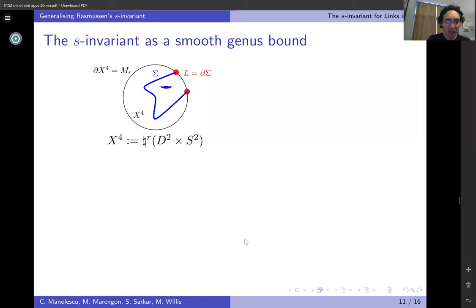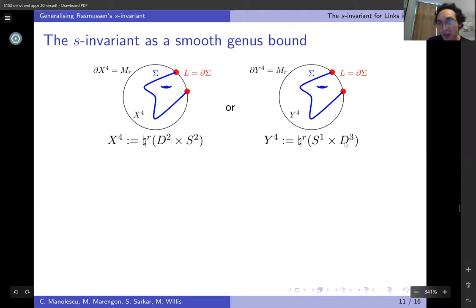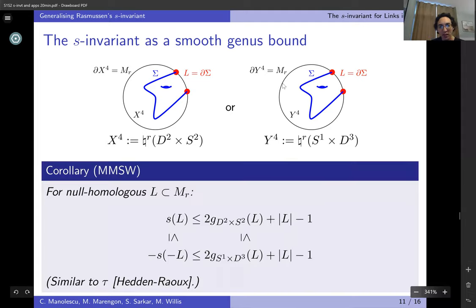This time around, you can use this to produce bounds on slice genus, but now slice genus can mean different things. On the one hand, you could say my S¹ cross S²'s bound D² cross S²'s via a boundary connect sum, or you can say my S¹ cross S²'s bound S¹ cross D³'s. The S invariant produces bounds in both cases, and in fact we have this nice little square of inequalities. If you have a null-homologous link, then the S invariant of your link as well as negative the S invariant of the reverse mirror of the link provide bounds for the slice genus whether you're viewing it in D² cross S² or in S¹ cross D³.